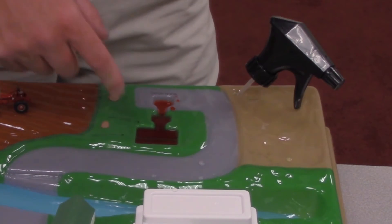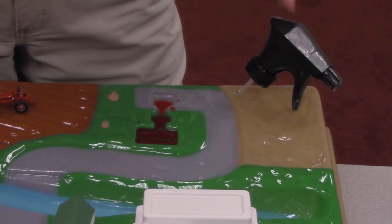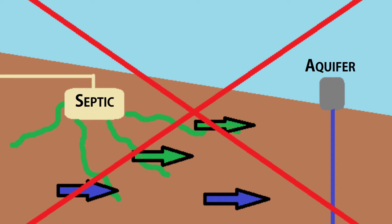One of the things to be aware of is that you definitely do not want your septic system upstream of your aquifer system that you're drawing your clean water from due to the possibility of cross contamination.